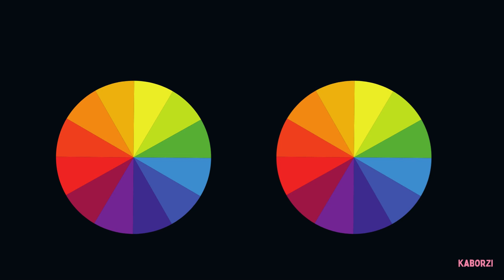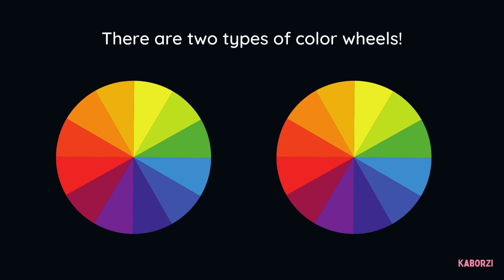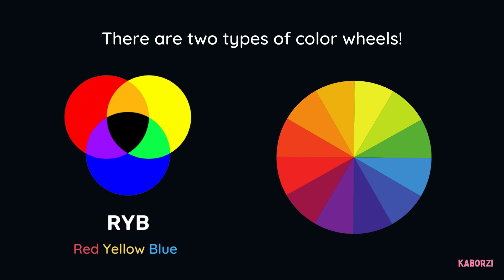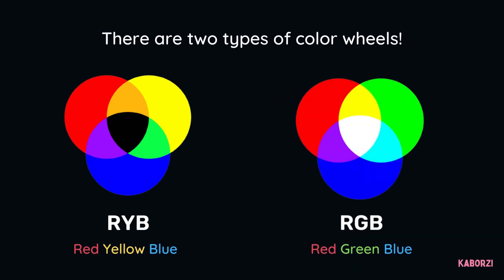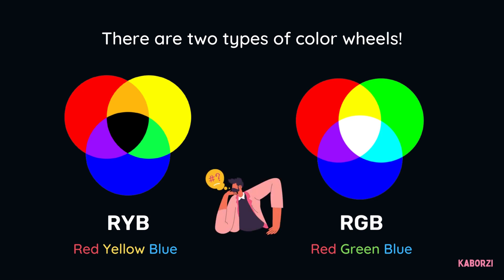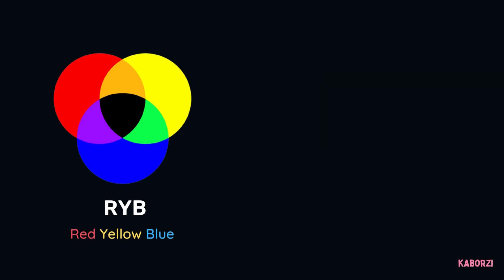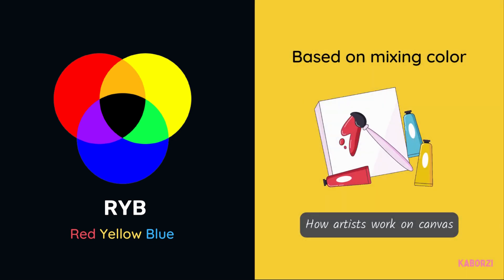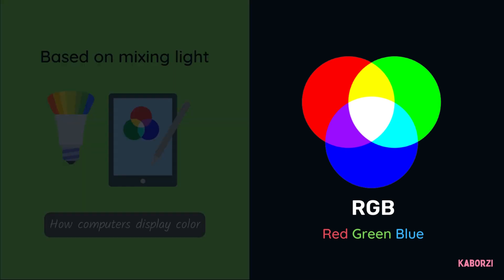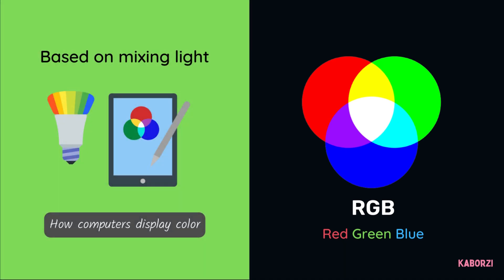One important call-out: while they look nearly identical, there are actually two types of color wheels. The biggest difference between the two is that RYB — red-yellow-blue — is based on mixing color, which is how artists work on canvas. And RGB — red-green-blue — is based on mixing light, which is how computers and other monitors display color.